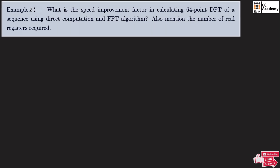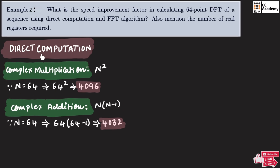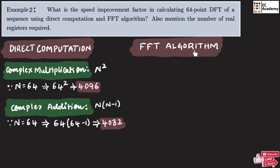Now let us take the second problem, where we find the speed improvement factor in calculating the 64-point DFT using direct computation as well as the fast Fourier transform algorithm. We also need to mention the number of real registers required. From the previous problem, for direct computation we already calculated: 4096 complex multiplications and 4032 complex additions for the 64-point DFT.